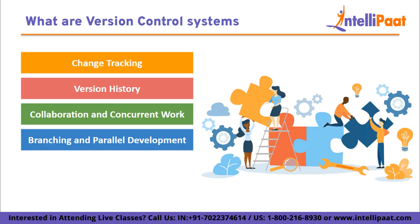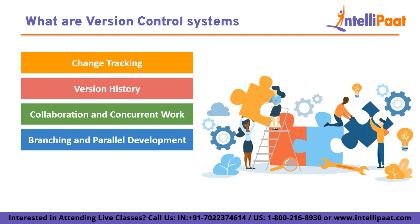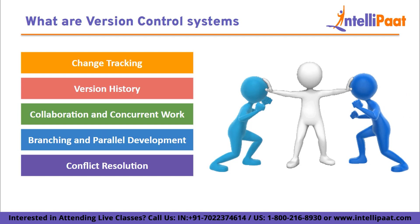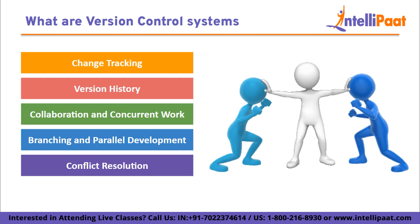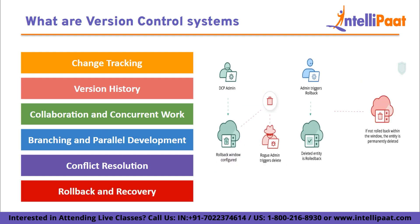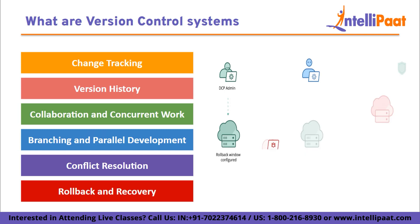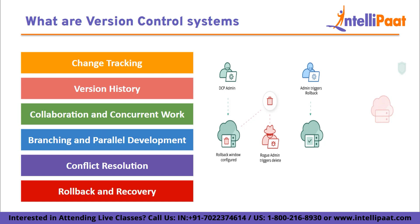Branching and parallel development: VCS allows for the creation of branches, which are independent lines of development. Branches enable isolation of features or experiments, facilitating parallel work and allowing changes to be merged back into the main project when ready. Rollback and recovery: VCS allows you to easily revert to a previous version or undo specific changes if needed. This feature provides a safety net, allowing you to recover from mistakes, experiment without fear, and maintain project stability.